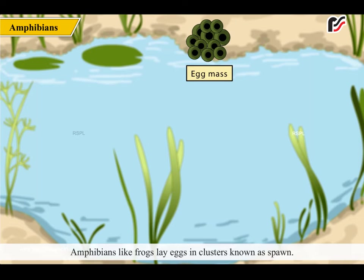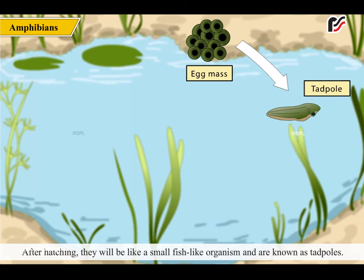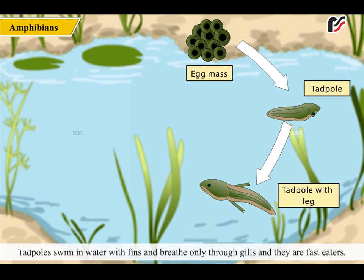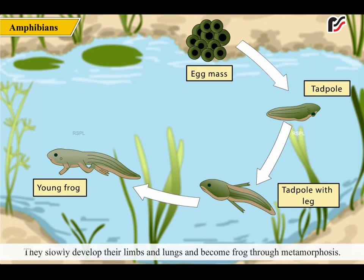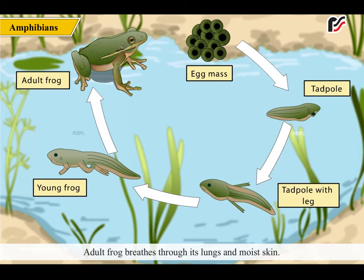Amphibians like frogs lay eggs in clusters known as spawn. After hatching, they look like small fish-like organisms and are known as tadpoles. Tadpoles swim in water with fins and breathe only through gills, and they are fast eaters. They slowly develop their limbs and lungs and become frogs through metamorphosis. Adult frogs breathe through their lungs and moist skin.